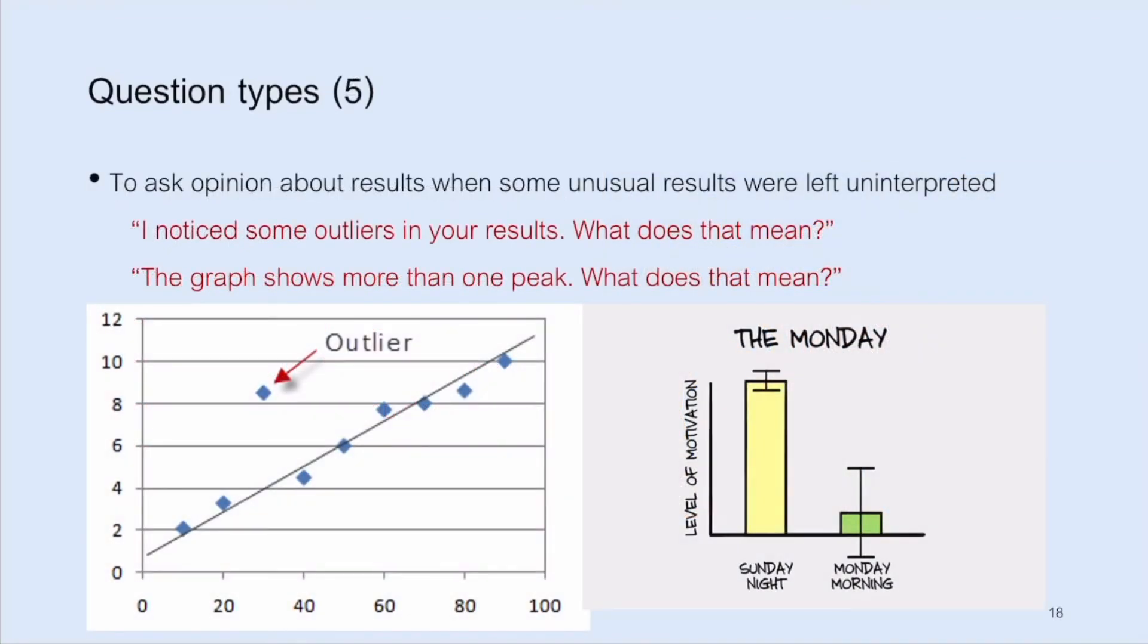To ask opinion about results when some unusual results were left uninterpreted. If your result shows an outlier, that's a good spot for people to ask. The question goes, for example, I noticed some outliers in your results. What does that mean? The graph shows more than one peak. What does that mean?